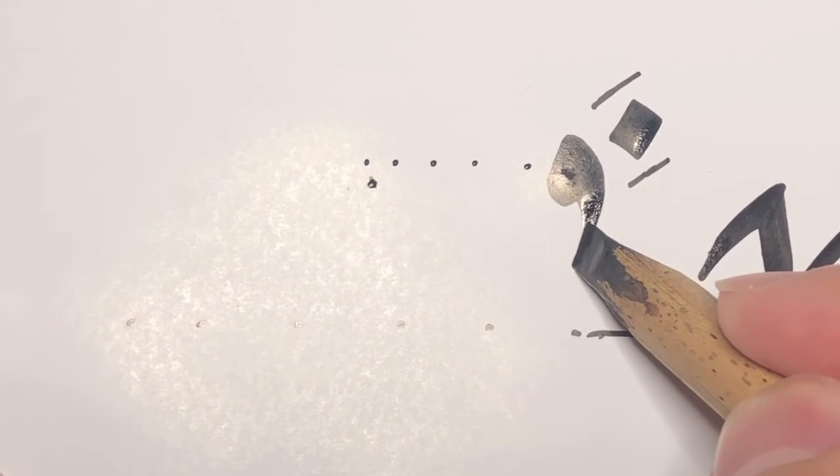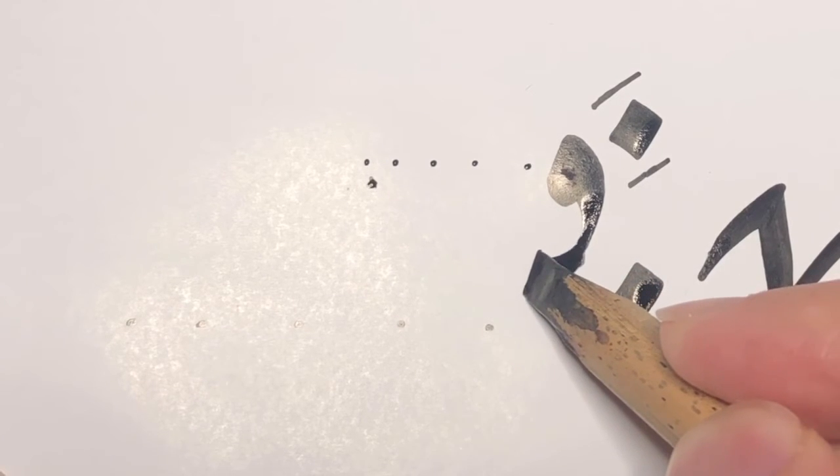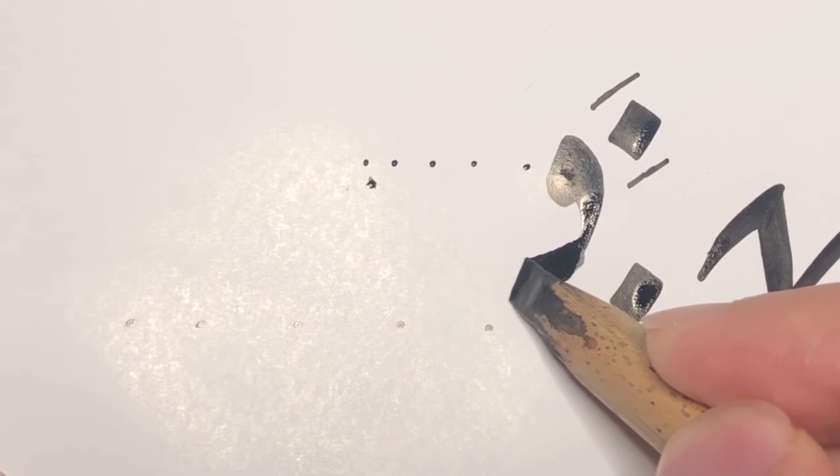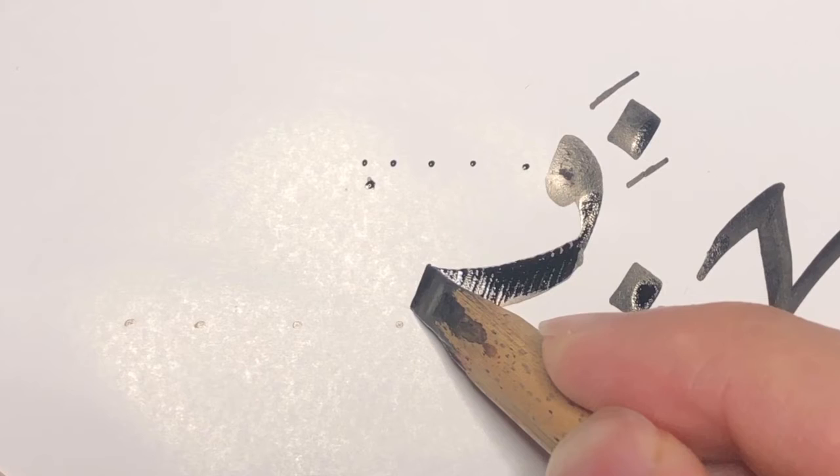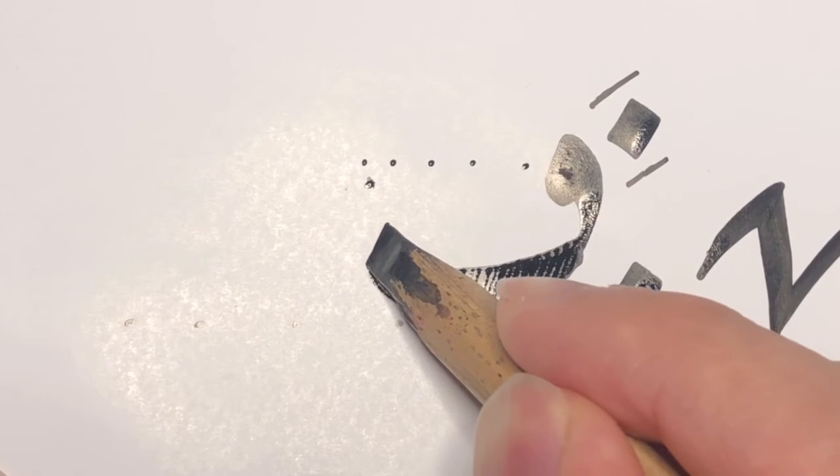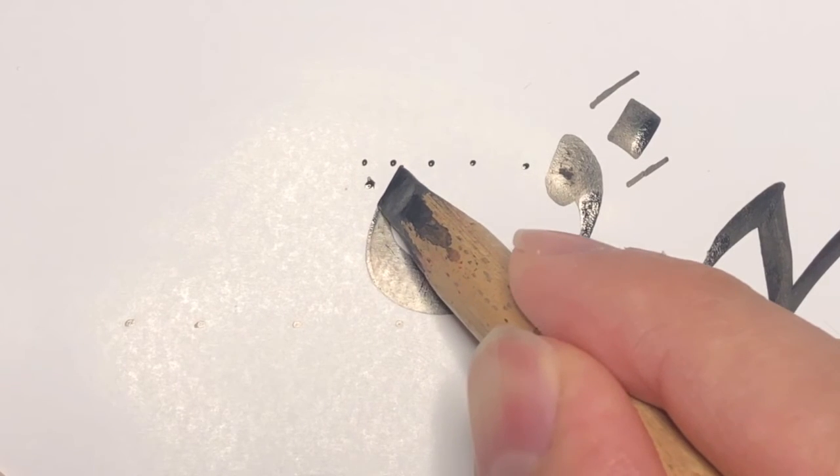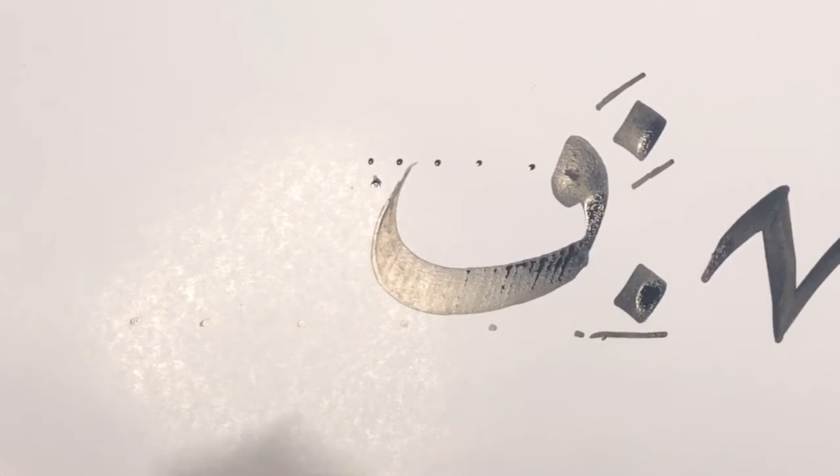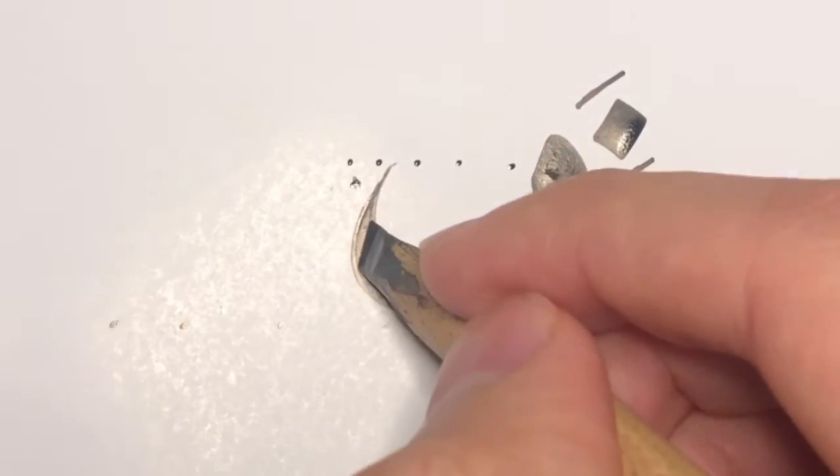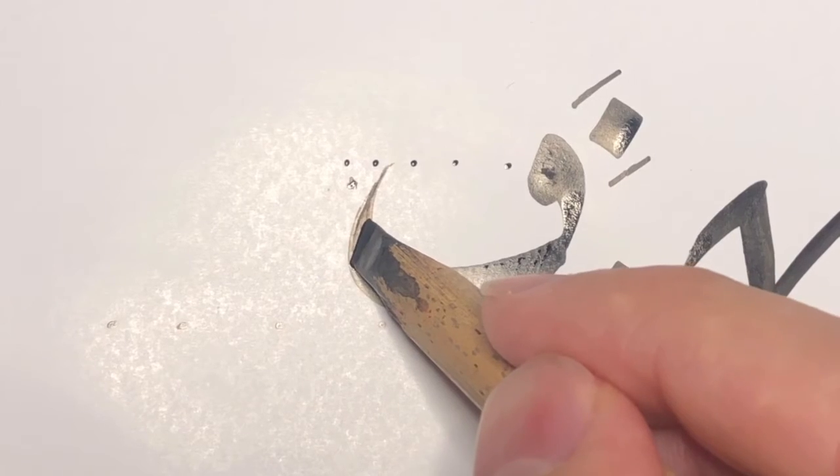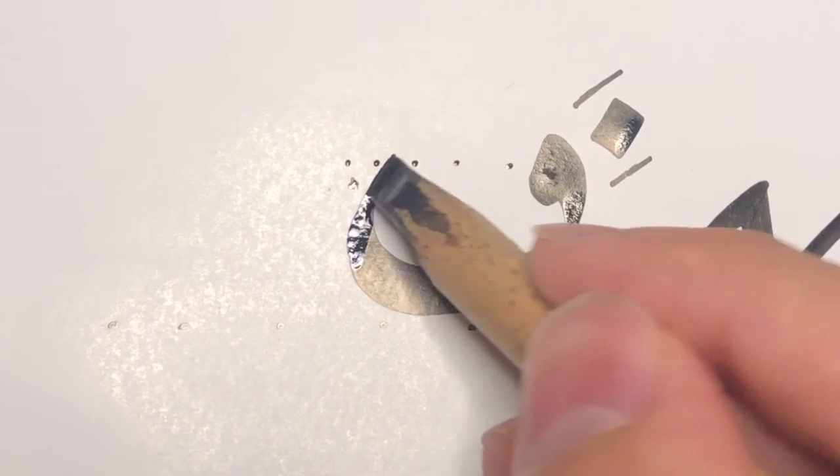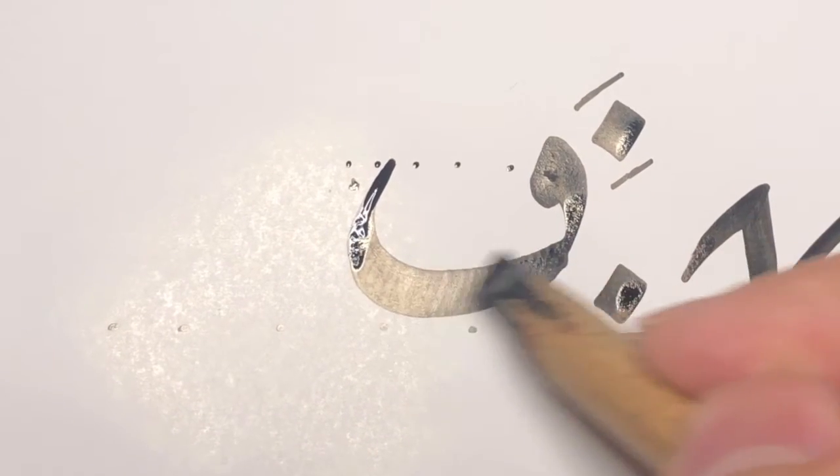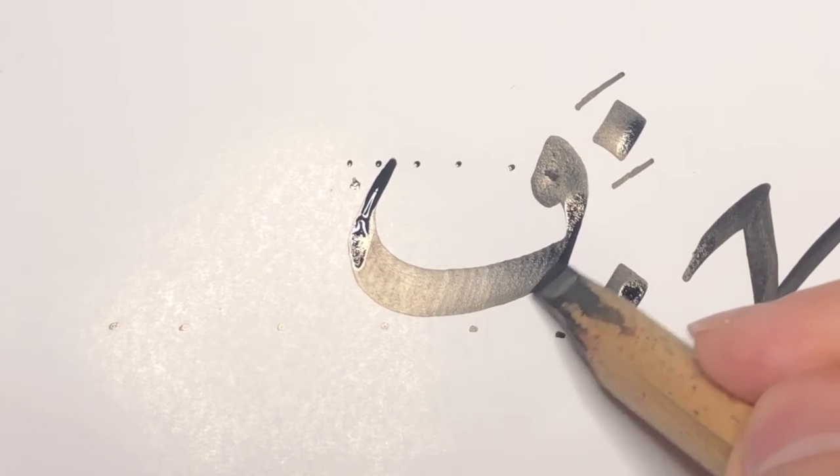Bismillah, we want to begin just like the harf al-ba'. Out for about three nuqtah's wide. And we want to go up to around where the head's length is.